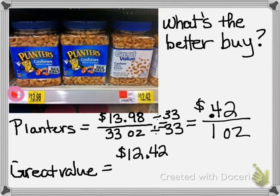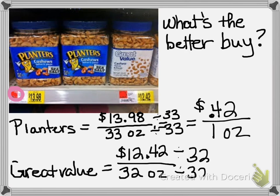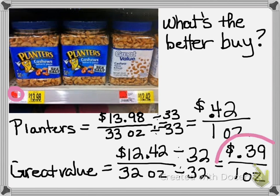Now let's look at the Great Value cashews. The price for the entire container is $12.42, but the Great Value container is only 32 ounces. It's cheaper, but it only contains 32 ounces — so let's see if it's actually a better buy. Dividing top and bottom by 32 gives me $0.39 for one ounce. So the Great Value is definitely the better buy.